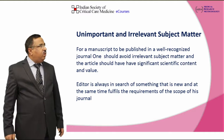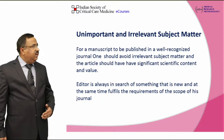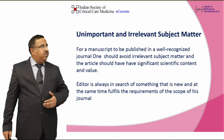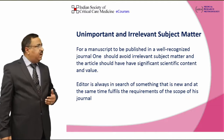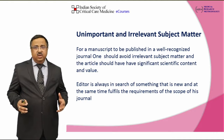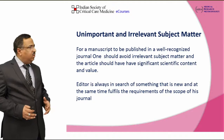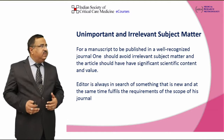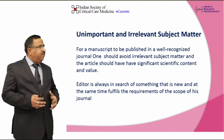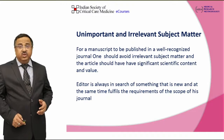Unimportant and irrelevant subject matter is another very important issue. For a manuscript to be published in a well-recognized journal, one should avoid irrelevant subject matter, and the article should have significant scientific content so that people read it and find that yes, they got something out of it. The editor is always in search of something that is new and at the same time fulfills the requirement or the scope of the journal to which you have submitted.